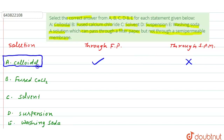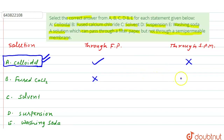In the case of fused calcium chloride, there is no dispersion medium — only solute. The particle size of fused CaCl₂ is very large, so it cannot pass through filter paper and also cannot pass through a semi-permeable membrane.